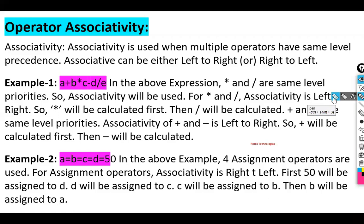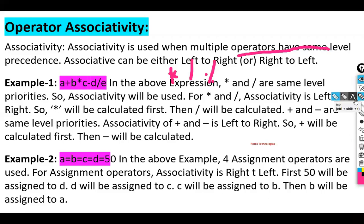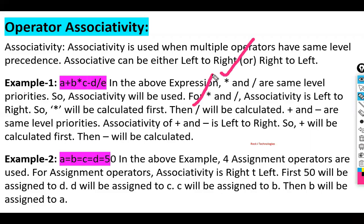Operator associativity is used when multiple operators have the same level of precedence. For example, multiplication and modulus have the same level. In the expression a + b * c - d / e, since multiplication and division are at the same level, associativity determines the order — multiplication is performed first, then division.